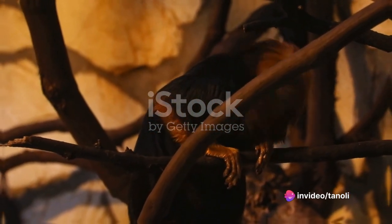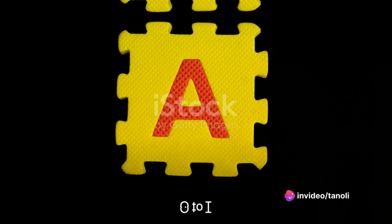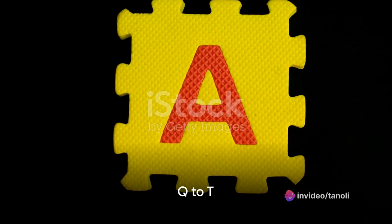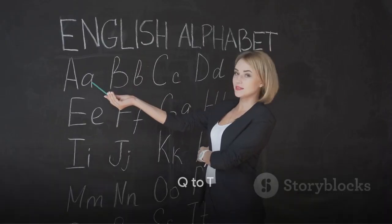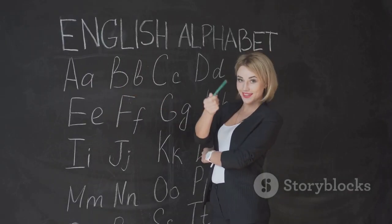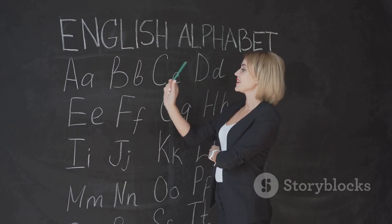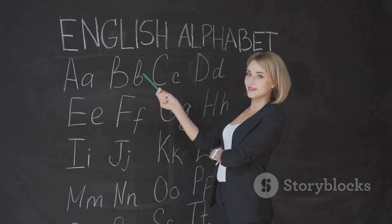We're cruising along. Let's keep moving. Q for Queen. R for Rabbit, R R Rabbit. S for Snake, S Snake. T for Tiger, T T Tiger.